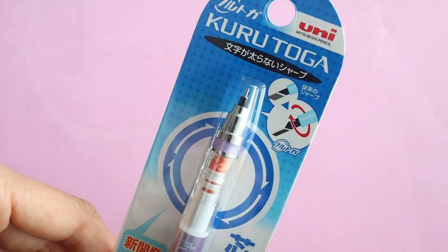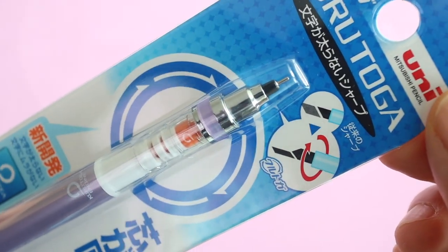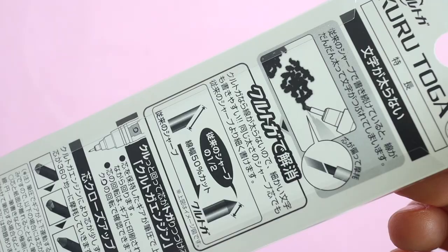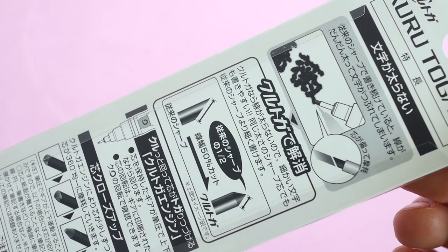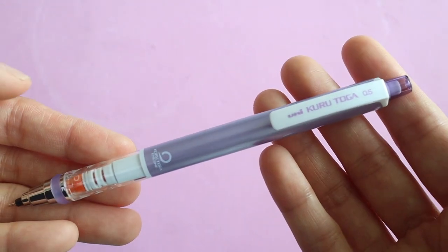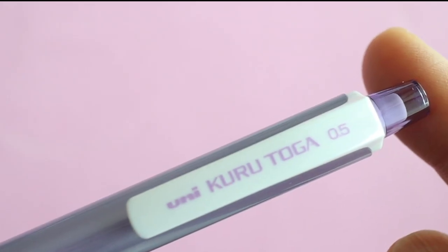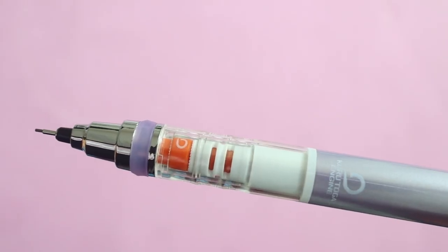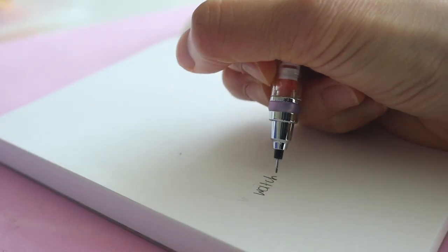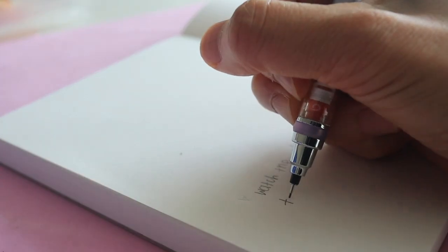This is the Kuru Toga lead pencil. And with ordinary lead pencils, the lead will get worn down on one side when you're writing, resulting in a slanted edge on that tiny piece of lead. And every time you write, the lines will look a little bit different depending on the angle of the pencil that you're using. Personally, this doesn't bother me. I actually like the flat side of the lead. But if you don't like this, then you should get this pencil because this pencil has a mechanism that rotates the lead while you write.